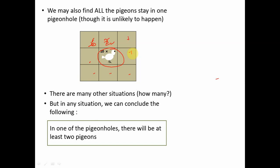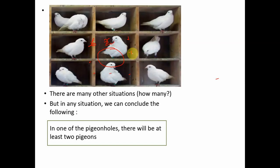Why? Because if there are 10 pigeons and only 9 pigeon holes, there is bound to be at least one pigeon hole with a minimum of 2 pigeons. As shown here, 8 pigeons have been placed in 8 separate pigeon holes, and 2 pigeons are required to share this one single pigeon hole.